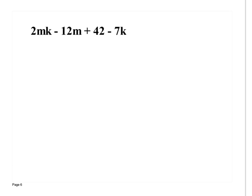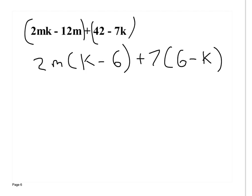So I've got 2mk minus 12m plus 42 minus 7k. I group these and this. And I factor out what I can. Of the first one, I can factor 2m out. I'm left with k minus 6. And then on the other side, I can factor. What do you think I can factor out? What do you guys think? I can factor out 42 and -7. Okay, I can factor out 7 and let's look at what's left. You get 6 here and you get minus k. Is k minus 6 and 6 minus k the same thing? No. So I can't factor out positive 7. Instead,